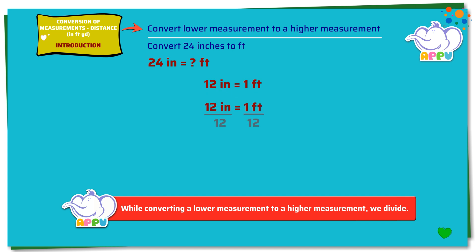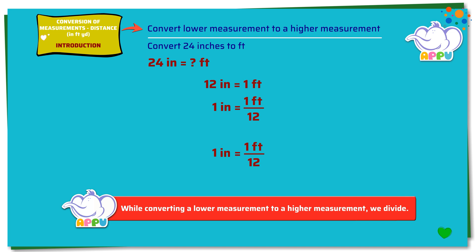Dividing both sides by 12, we get 12 inches divided by 12 equals 1 foot divided by 12. 12 divides 12 once. Now we get 1 inch equals 1 foot divided by 12.